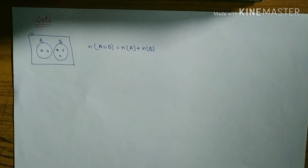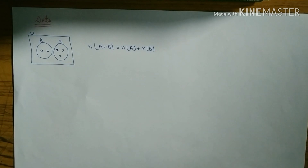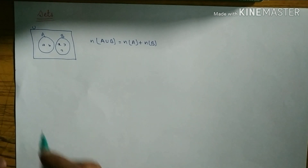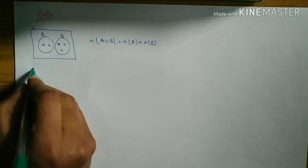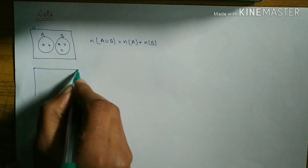So the formula of n(A∪B) is equal to n(A) plus n(B). Similarly, when two sets are joined, we use a different formula.